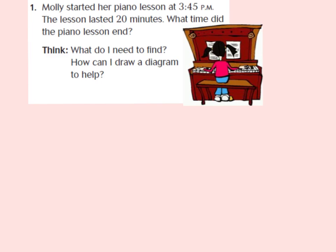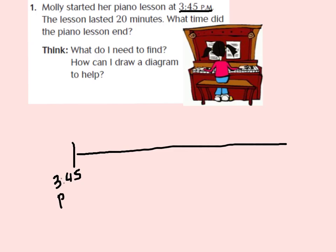What we're going to do to figure this out is draw a diagram and use a timeline to find her end time. Underneath number one in your GoMath book on page 237, draw a line just like mine — that's our timeline. We know it started at 3:45 p.m., so we're going to mark a start time of 3:45 p.m.